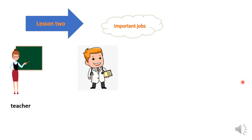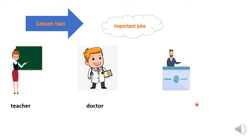The next job is doctor. This is a doctor. A doctor is someone who works at a hospital — he helps us when we are sick. After that we have teller. A teller is someone who works at a bank — he takes money from us and gives money to us when we want. This is the word 'teller'. Note the double L, but we pronounce it as only one L: teller. Again: teacher, doctor, and teller.